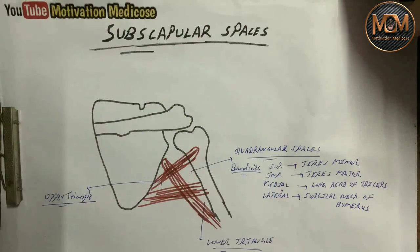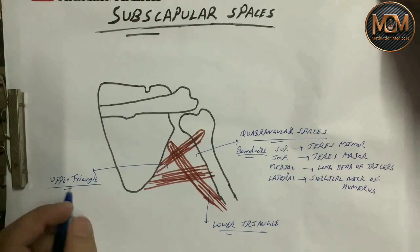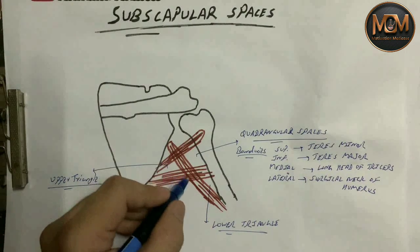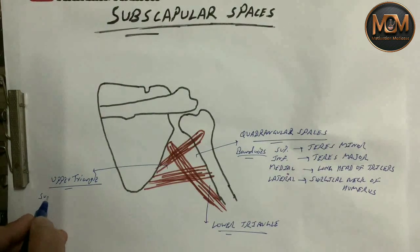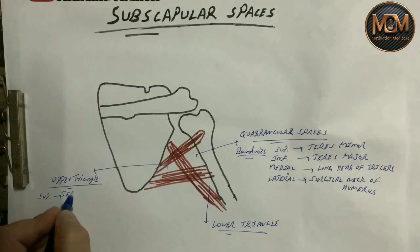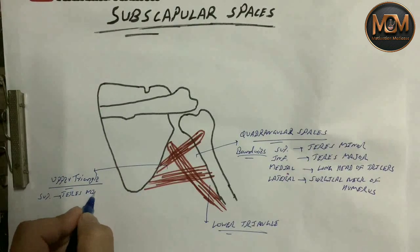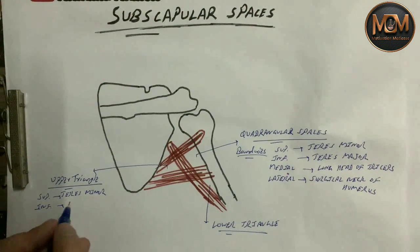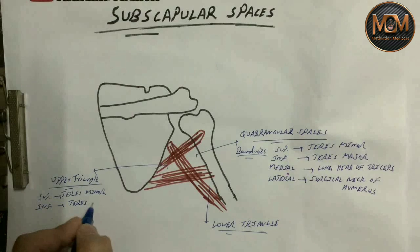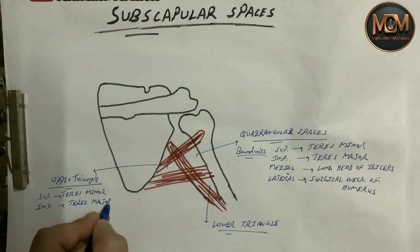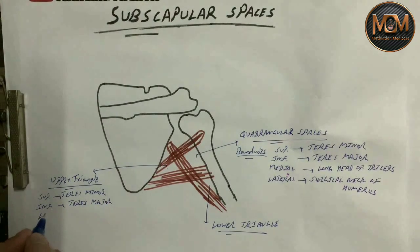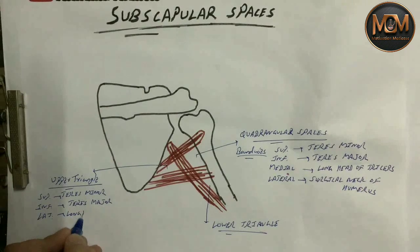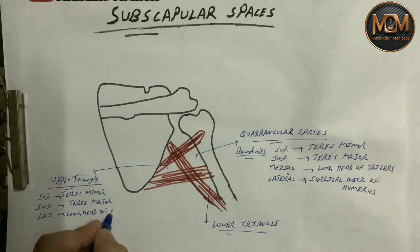Now for the upper triangle: it has superior, inferior, and lateral boundaries. Superiorly is teres minor, inferiorly is teres major, and on the lateral side is the long head of triceps.